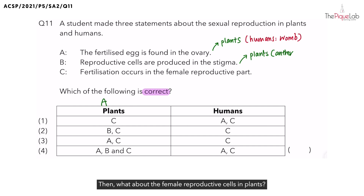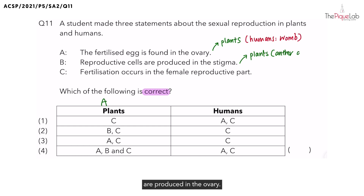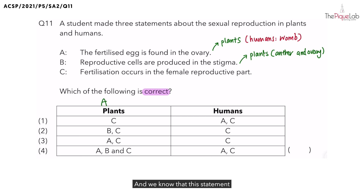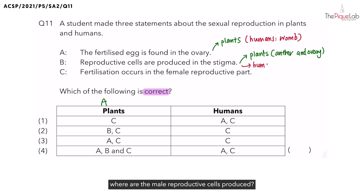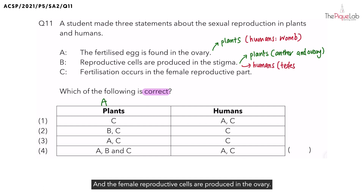What about female reproductive cells in plants? They are produced in the ovary. And for humans, male reproductive cells are produced in the testes, while female reproductive cells are produced in the ovary. So Statement B is not true for both plants and humans.